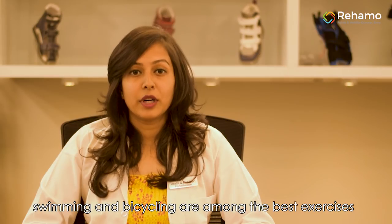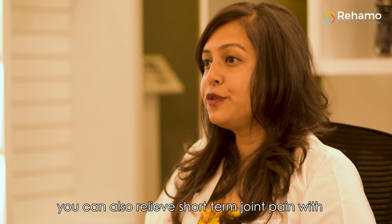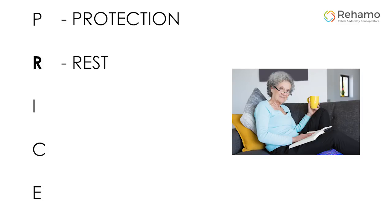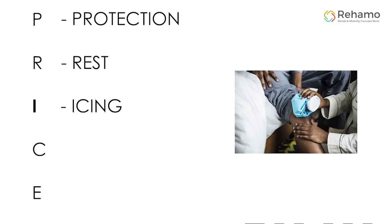Swimming and bicycling are among the best exercises. You can relieve short-term joint pain with a few techniques at home called PRICE, wherein P stands for Protection — protect the joint using a brace or a wrap. R stands for Rest — rest the joint and avoid any activities that can cause you pain. I stands for Icing — ice the affected joint for about 15 minutes several times each day, which will reduce your inflammation and swelling. Never apply ice directly to your skin; instead use a thin towel or piece of clothing around a bag of ice.